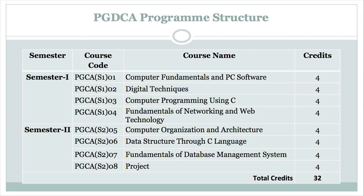In the second semester, we have three courses and one project work. The three courses are Computer Organization and Architecture, Data Structure through C language, and Fundamentals of Data Waste Management System. Each of these courses carries four credits and the total credits including the project is 32.